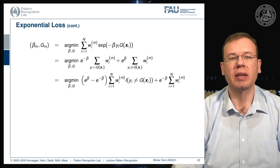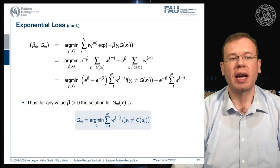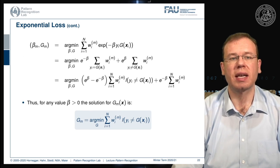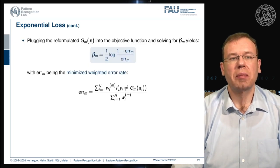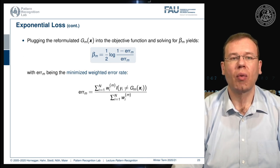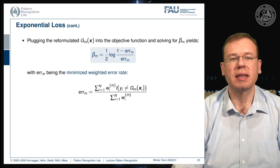We can use an indicator function to represent the misclassified samples. For every value of beta greater than zero, the solution for the minimization is found as the minimization over the sum of the weight times the indicator function. Plugging the reformulated g_m into the objective function and solving for beta_m yields that beta_m equals one half times the logarithm of one minus the error_m divided by error_m, where error_m is the minimized weighted error rate — the sum of misclassification weights divided by the total sum of weights.